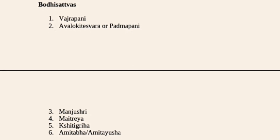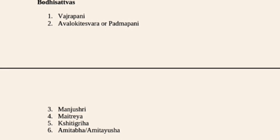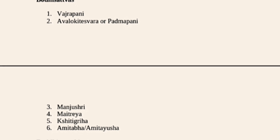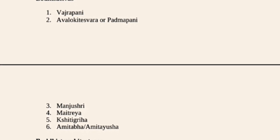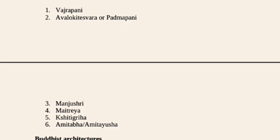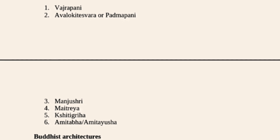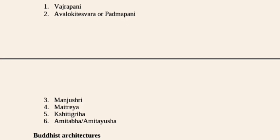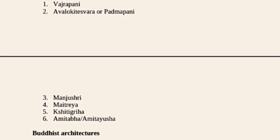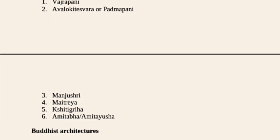Six Bodhisattvas are mentioned: Vajrapani, Avalokiteshvara (Padmapani), Manjushri, Maitreya, Kshitigarbha, and Amitabha (Amitayusha).